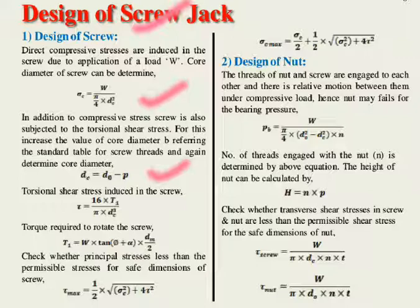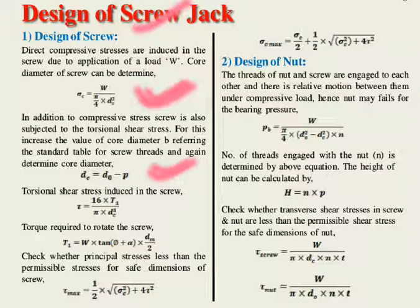We must compare both dc values — the one from the compressive stress formula and the one from dc = d₀ − p. If there is no torsional stress, simply use the dc from the compressive formula. If torsional stress is also present, compare both values and take the greater one for further design steps.